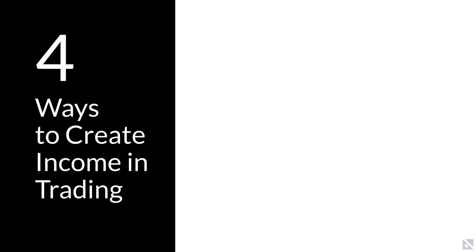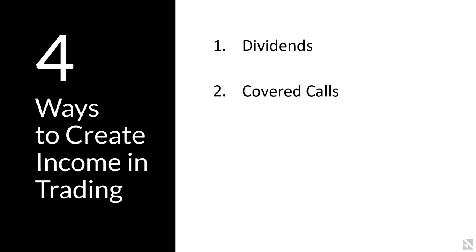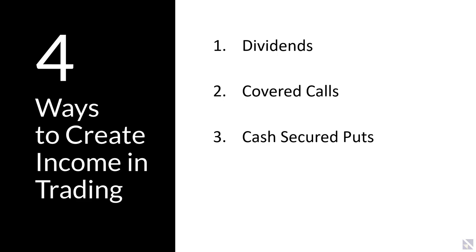So let's discuss four ways to create income in trading. First, we can purchase stocks that pay dividends — VectorVest has a great search tool for this. Second, covered calls: purchase a stock and sell the right to that stock to someone else to create income. Third, cash secured puts: sell a put on a stock, promising you'll buy it at a lower price. Fourth, option spread trading, which requires the least amount of investment.